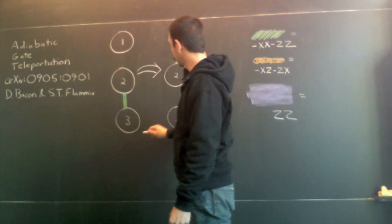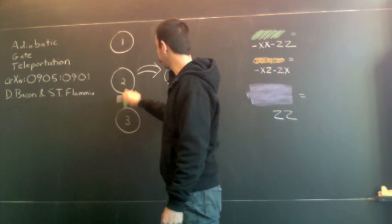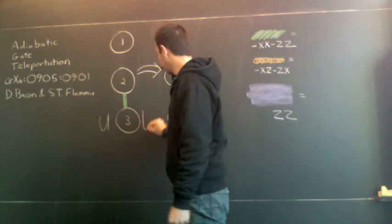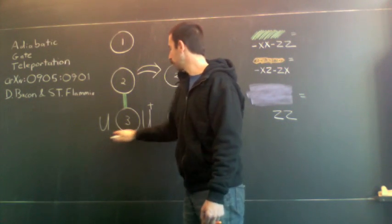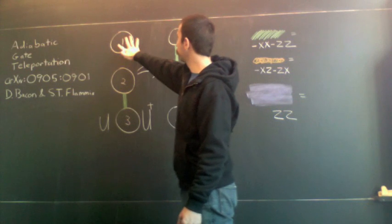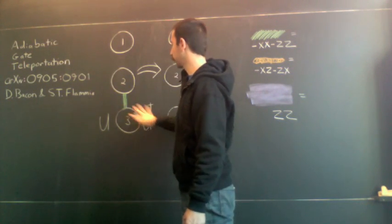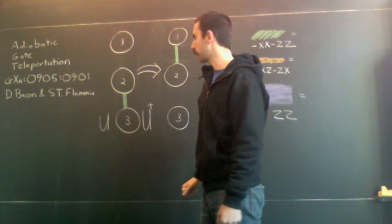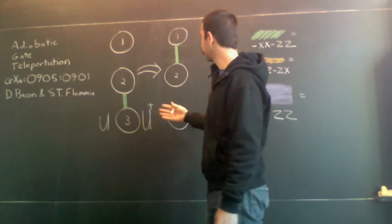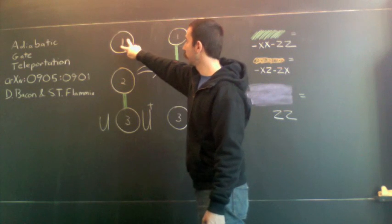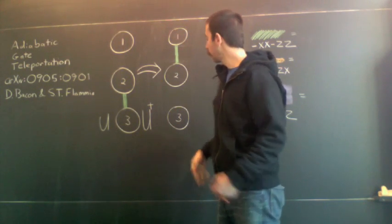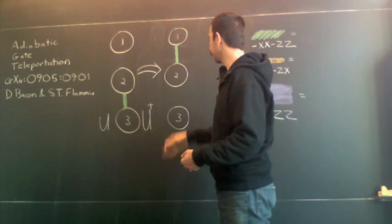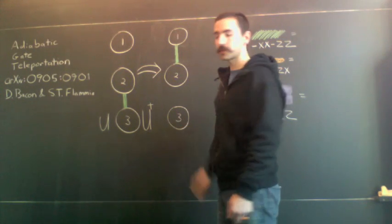Then we modify the initial Hamiltonian so that instead of having an XXZZ coupling between qubits two and three, we do some unitary rotation on the third qubit first. Our information is stored in the first physical qubit, so this gate is done offline, in analogy with gate teleportation. When we go through the same teleportation procedure, maintaining a constant gap, the information is swapped from the first physical qubit to the third, but this time the logical information picks up a single qubit unitary gate — successfully teleporting the gate onto the quantum information now stored locally in the third qubit.